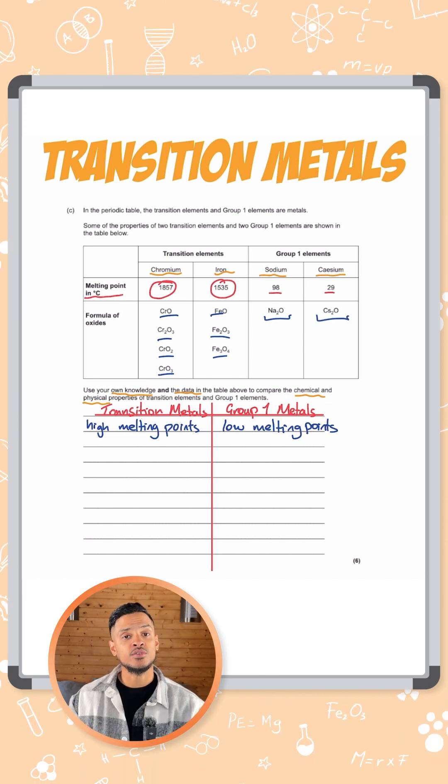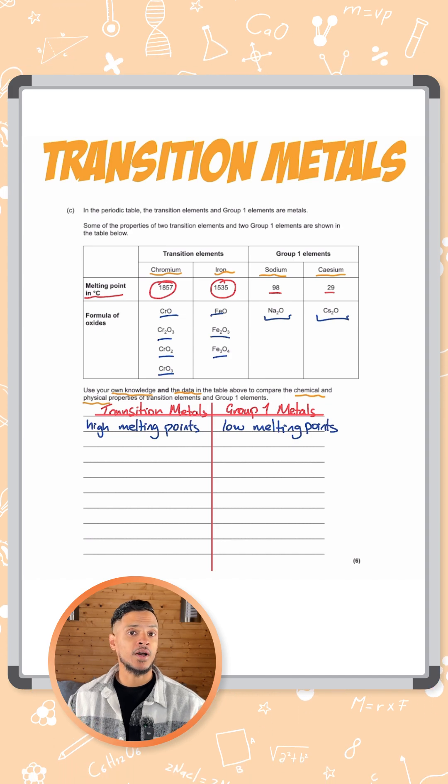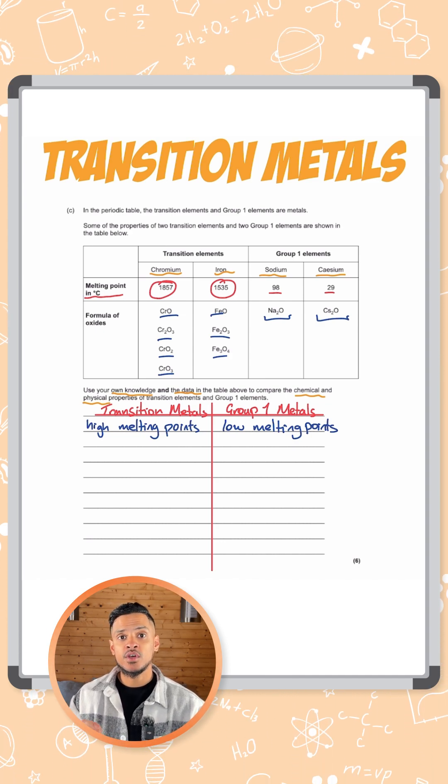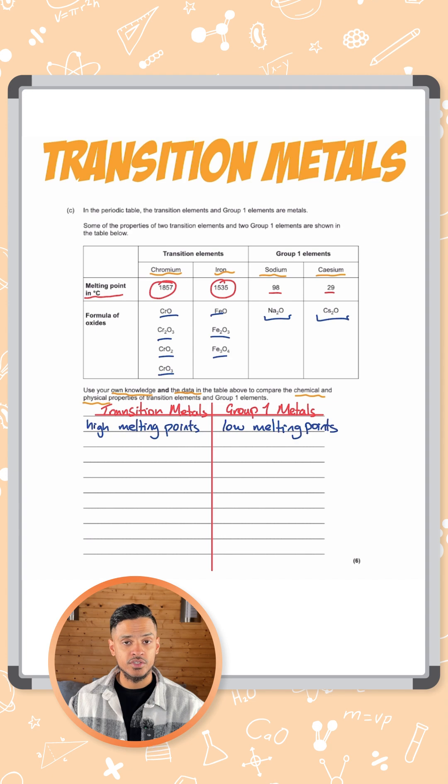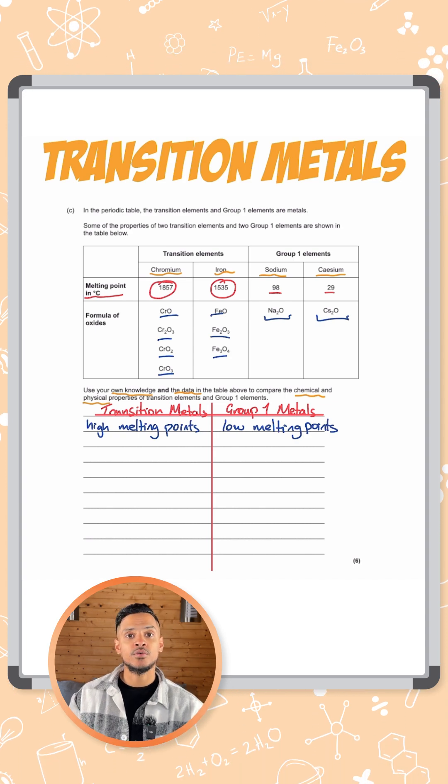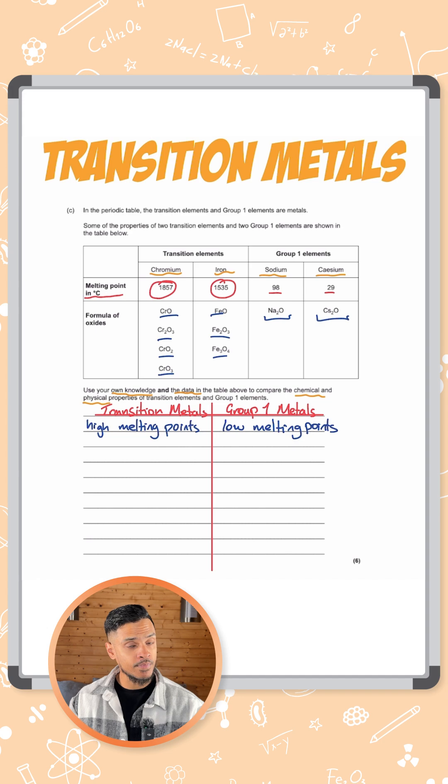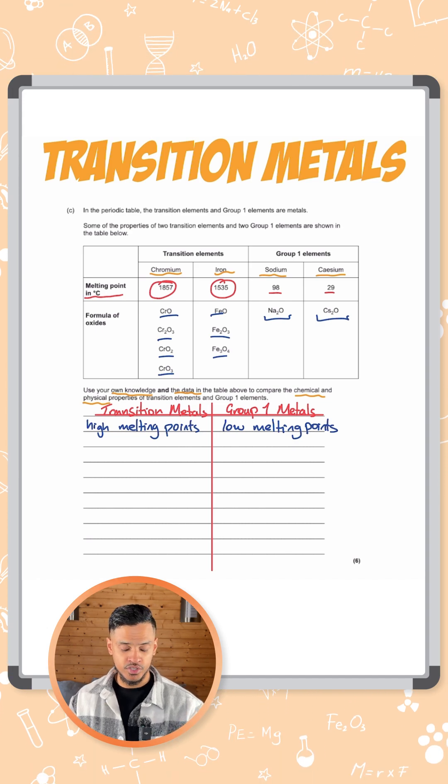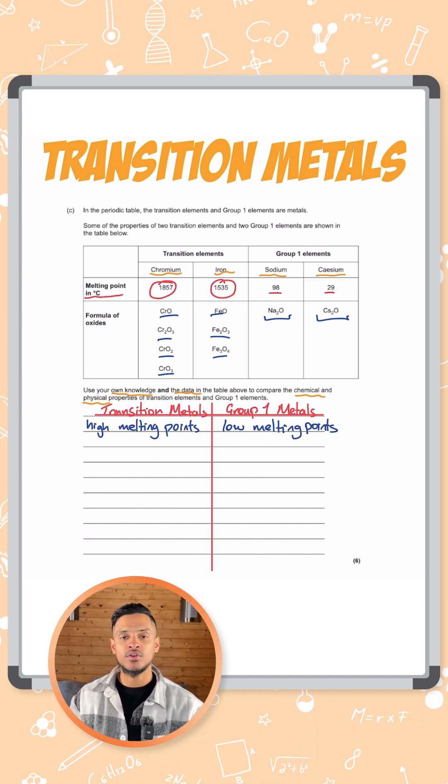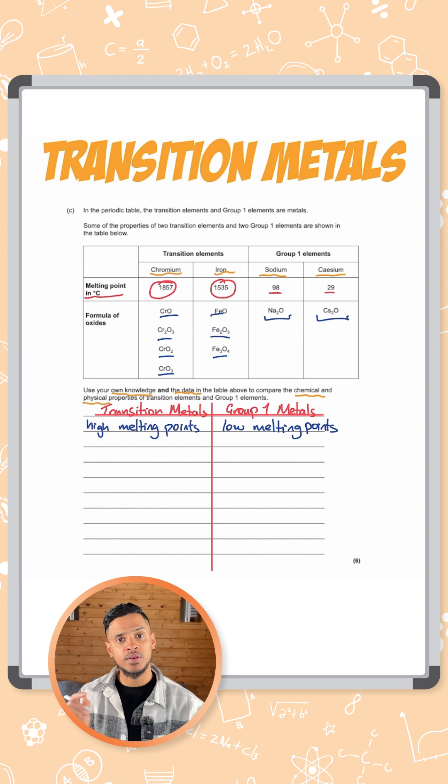So this is to do with one unique property about transition elements. They can form ions with loads of different charges. So for iron for example it can form an Fe2+ ion and it can also form an Fe3+ ion. It can form multiple different charges. Whereas for sodium and cesium they can only form ions with plus one on them.